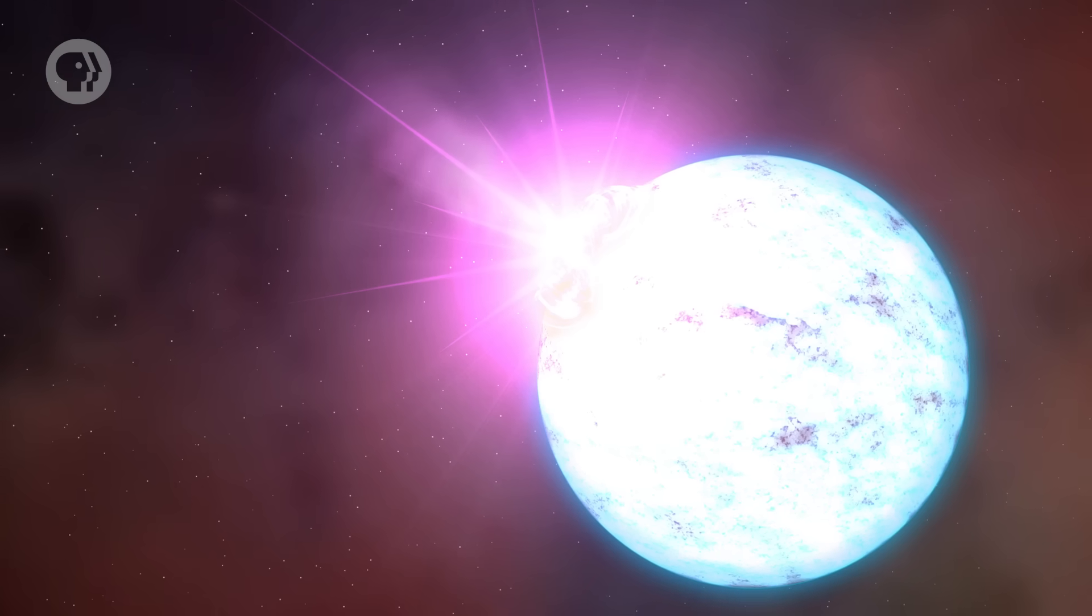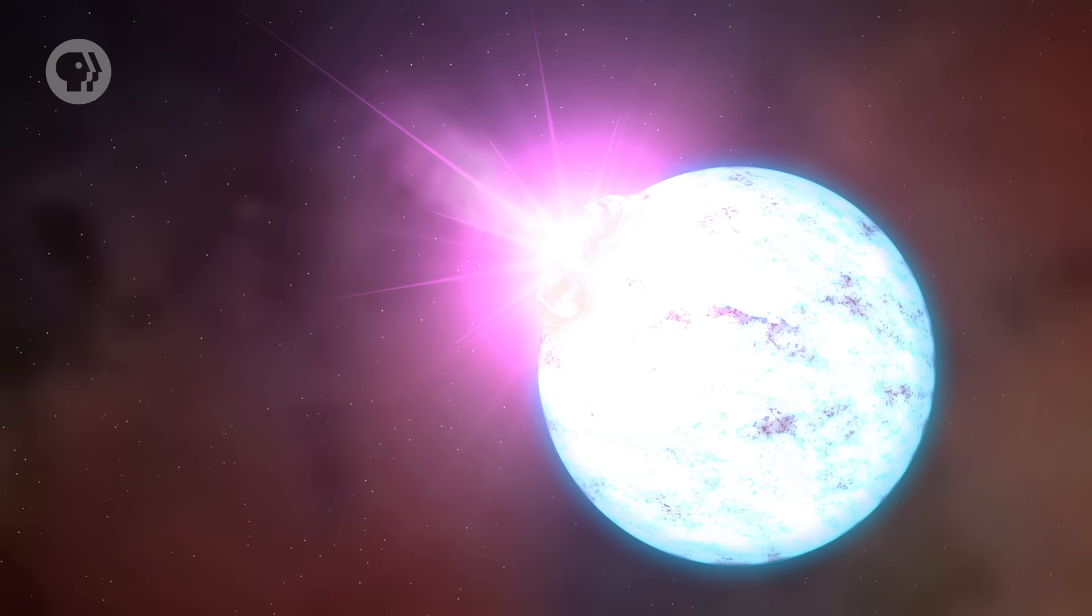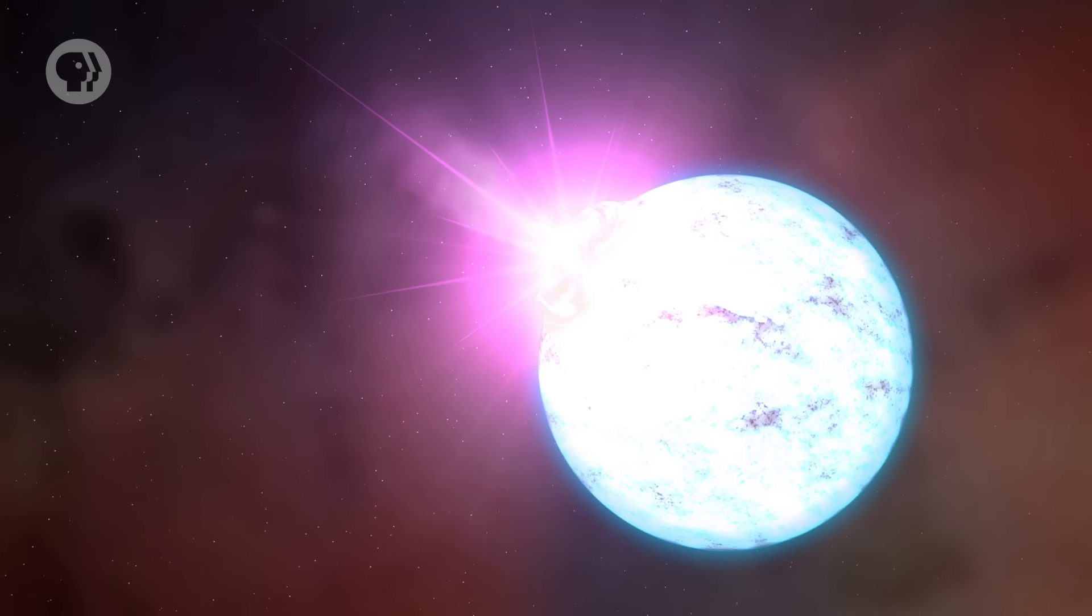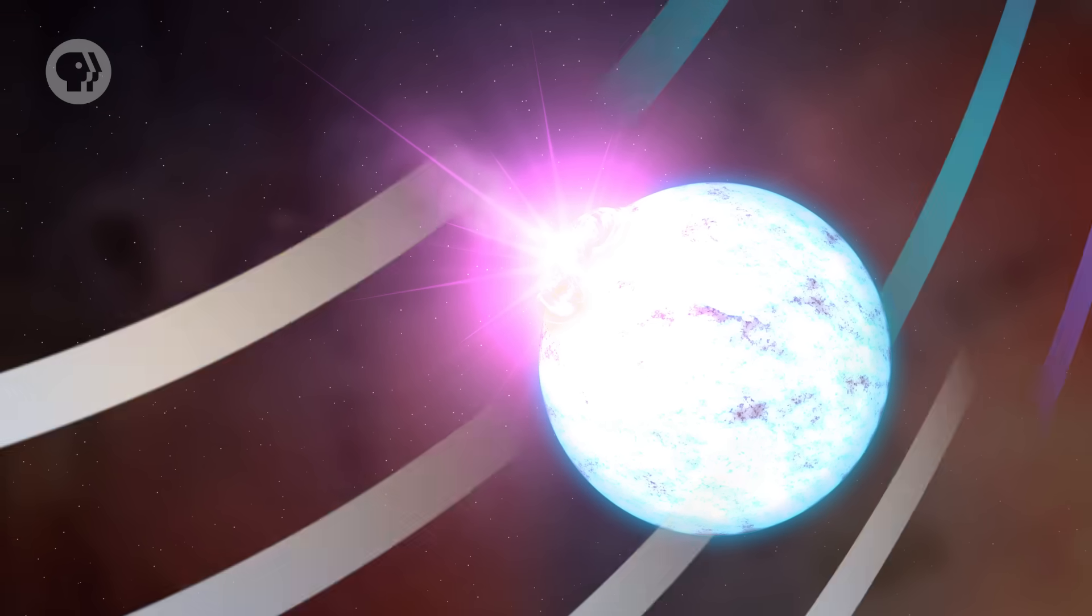If the core is heftier, between 1.4 and 2.8 times the Sun's mass, it collapses even further, becoming a neutron star that's only 20 kilometers across. The neutron soup inside of it resists the collapse and prevents the core from shrinking any more.